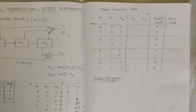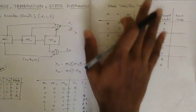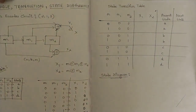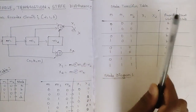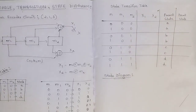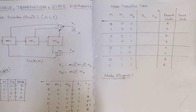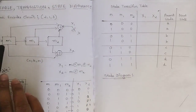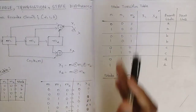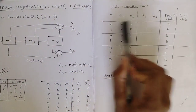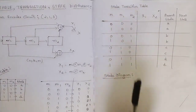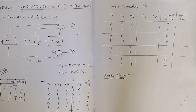Now the state transition table: listen carefully, this is very important. Focus on this page and the circuit simultaneously. To build a state transition table, you need these parameters: m, m1, m2, the two outputs x1 and x2, present state, and next state. There are four combinations with respect to the state table. I have written all four combinations — 00, 01, 10, 11 — twice, once for input m=0 and once for m=1.